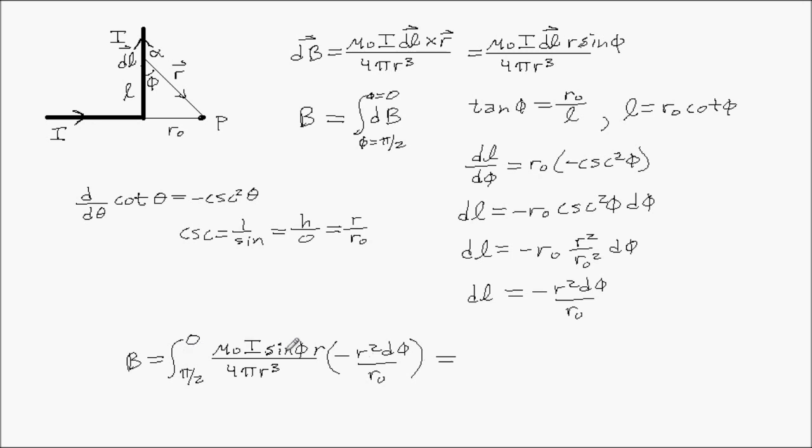So b is going to equal the integral from pi over 2 to 0, but I'm going to get rid of this dl. Let's clean this up. I'm going to bring the sine of phi in, and there's an r still, and then dl, which is this. The r's are all going to cancel. I'll get a negative. Mu naught i, which is a constant.